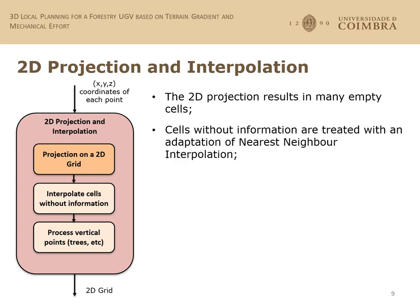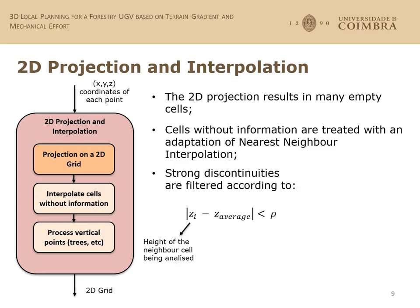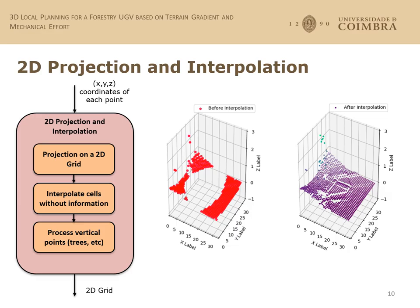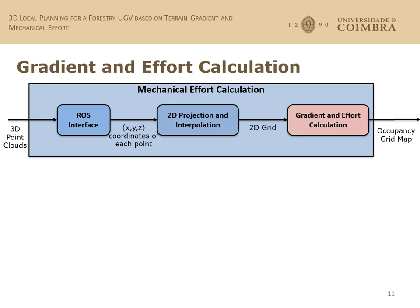In these two steps, we estimate the value of the cells without information using an adaptation of nearest-neighbor interpolation. In this adaptation, we analyze the rows, columns, and diagonals to find neighbors with information and compute their mean. Before that, strong discontinuities are filtered using the equation: Z_I is the Z value of a given neighbor, Z_average is the weighted average of all neighbors, and rho is an empirically chosen threshold. Only neighbors that fulfill this condition are used to compute the mean. After applying this interpolation, we obtain a complete map, as seen in the plot on the right.